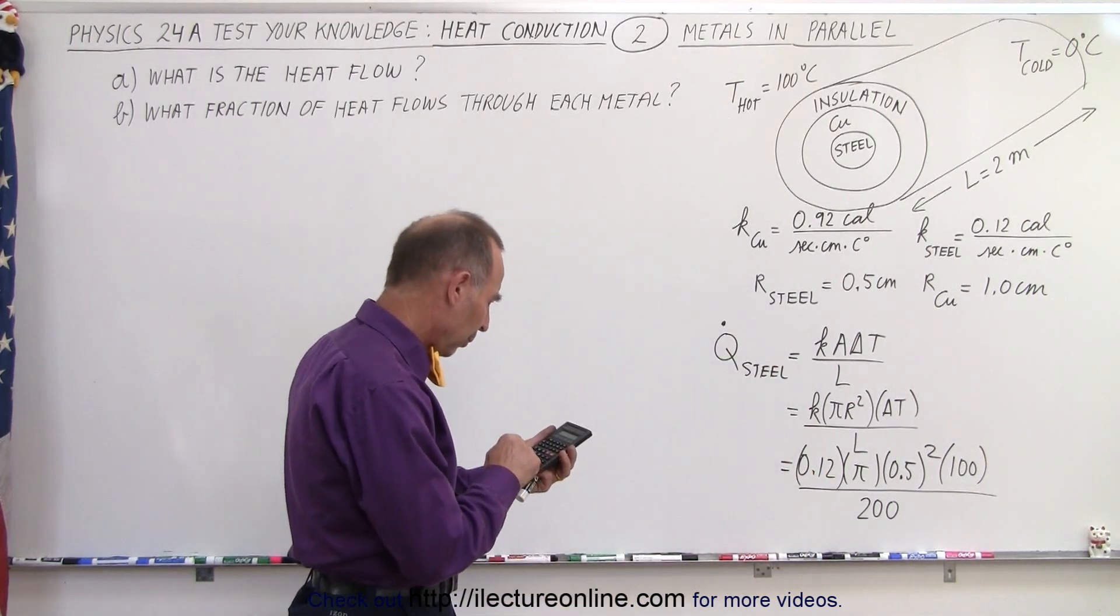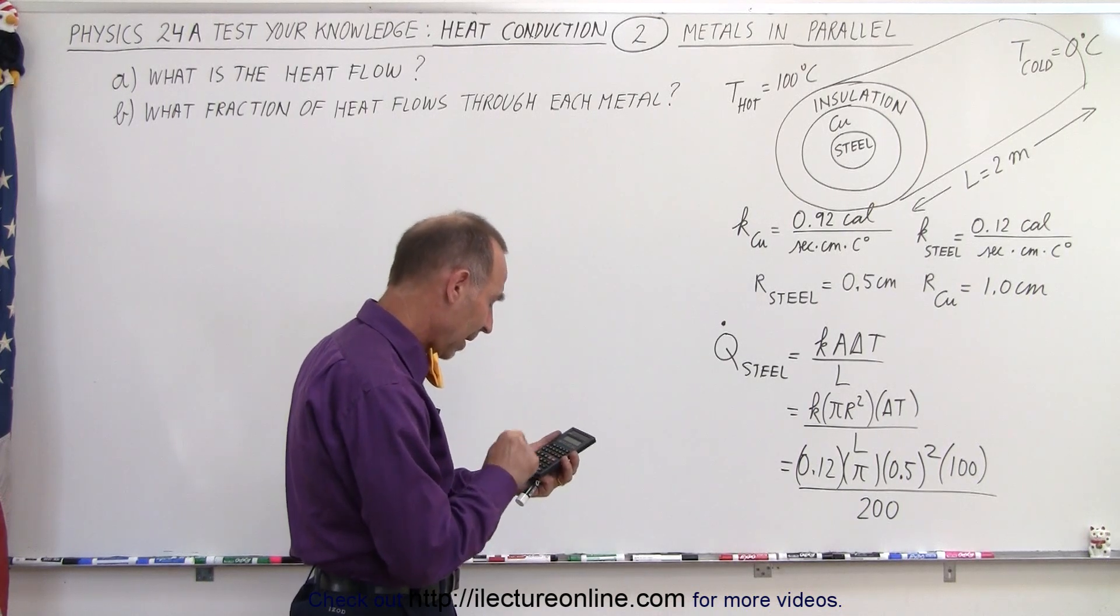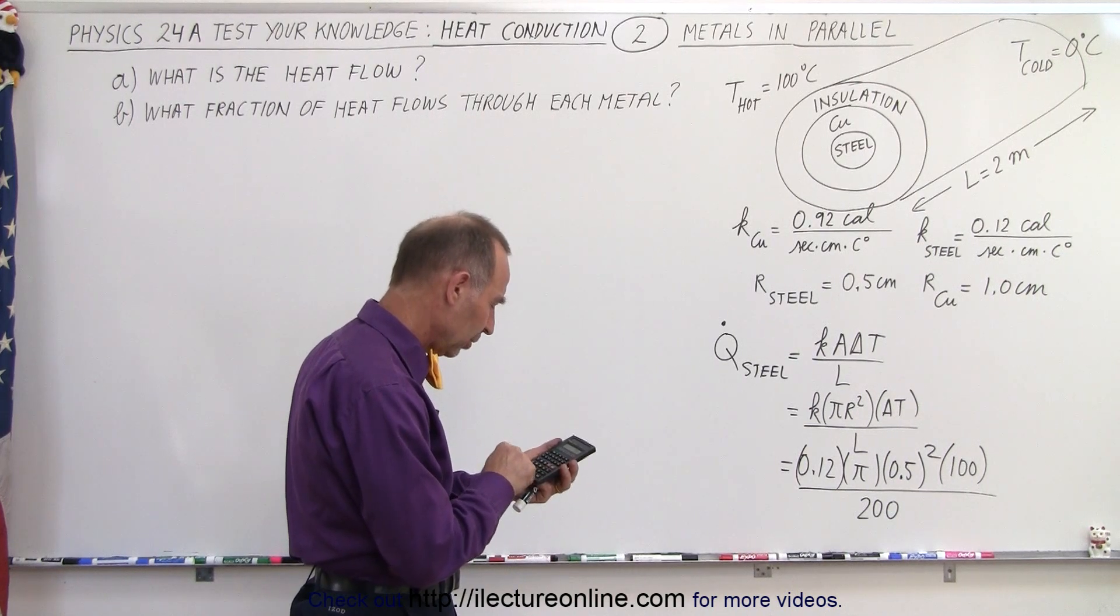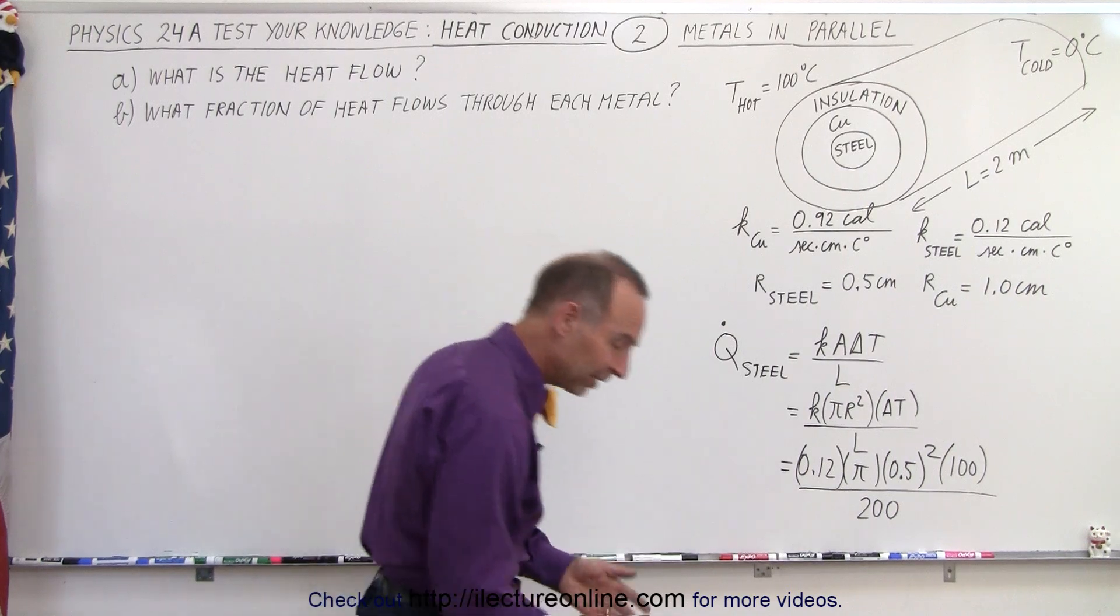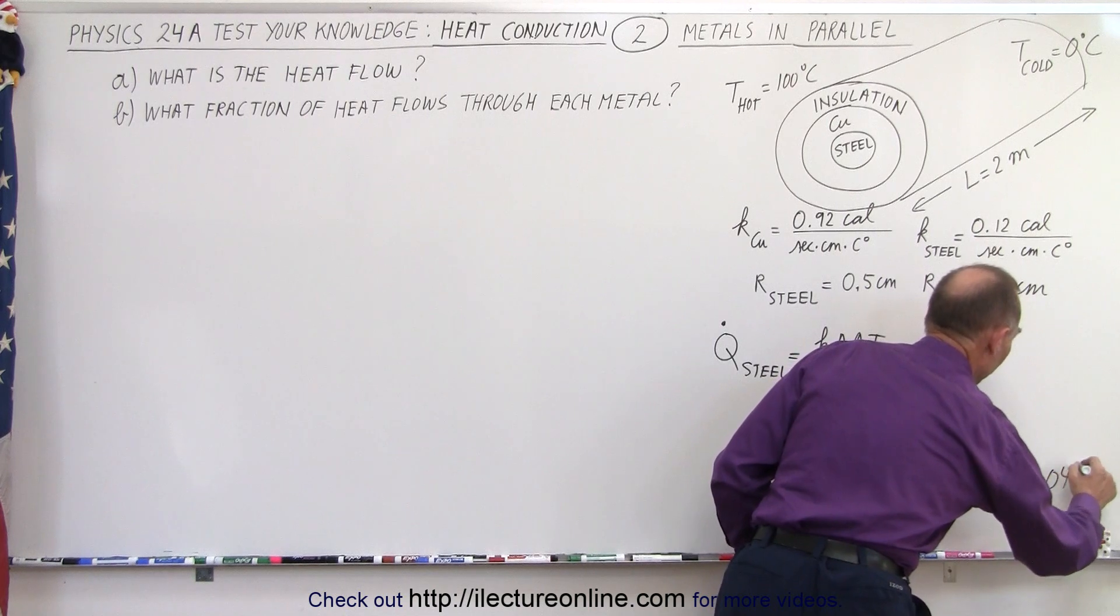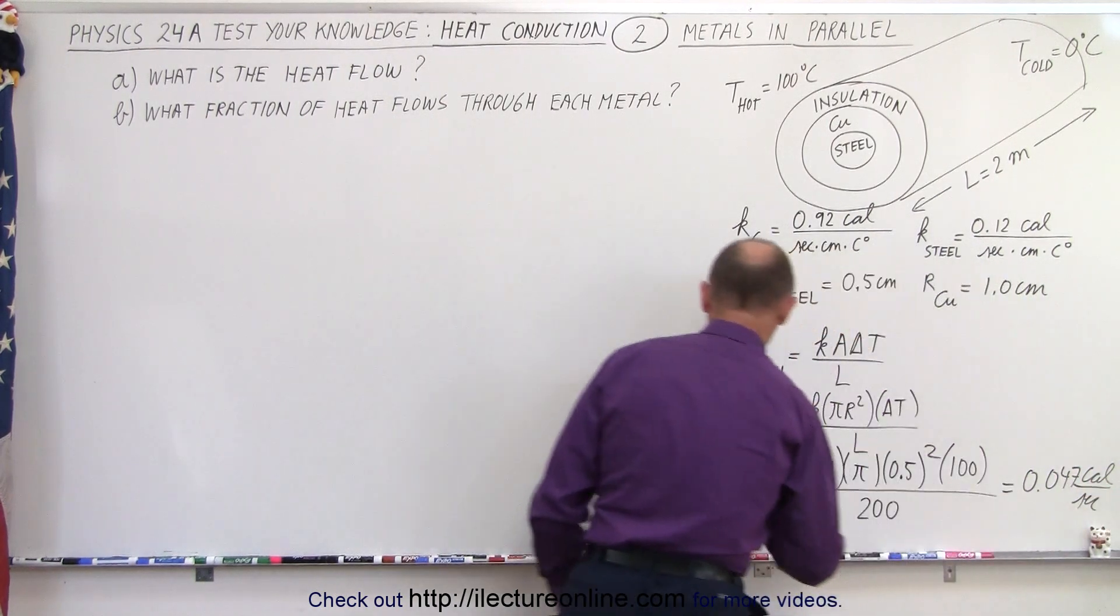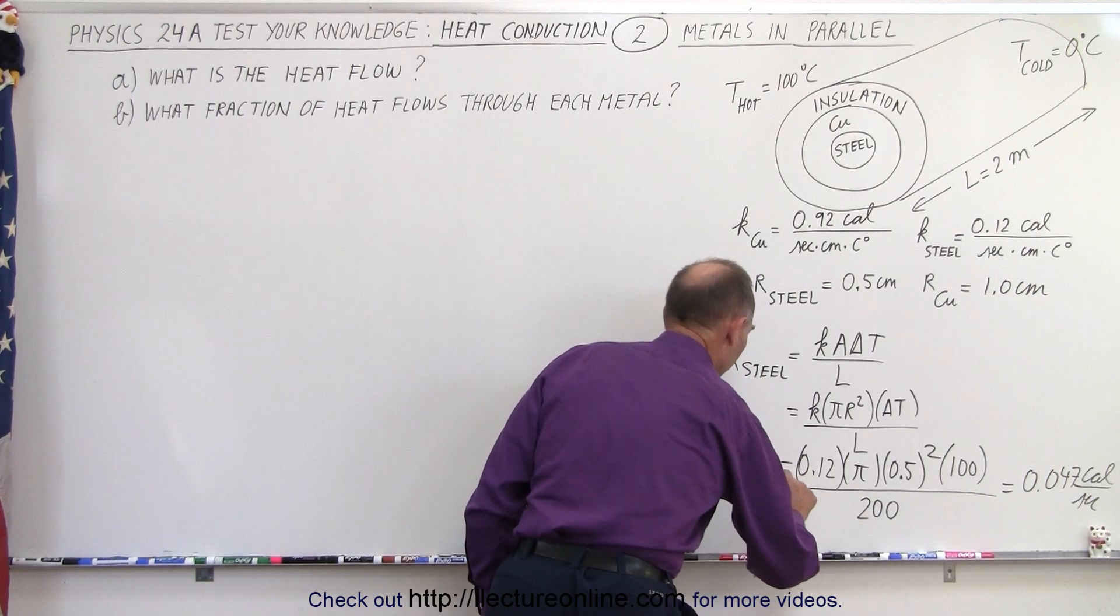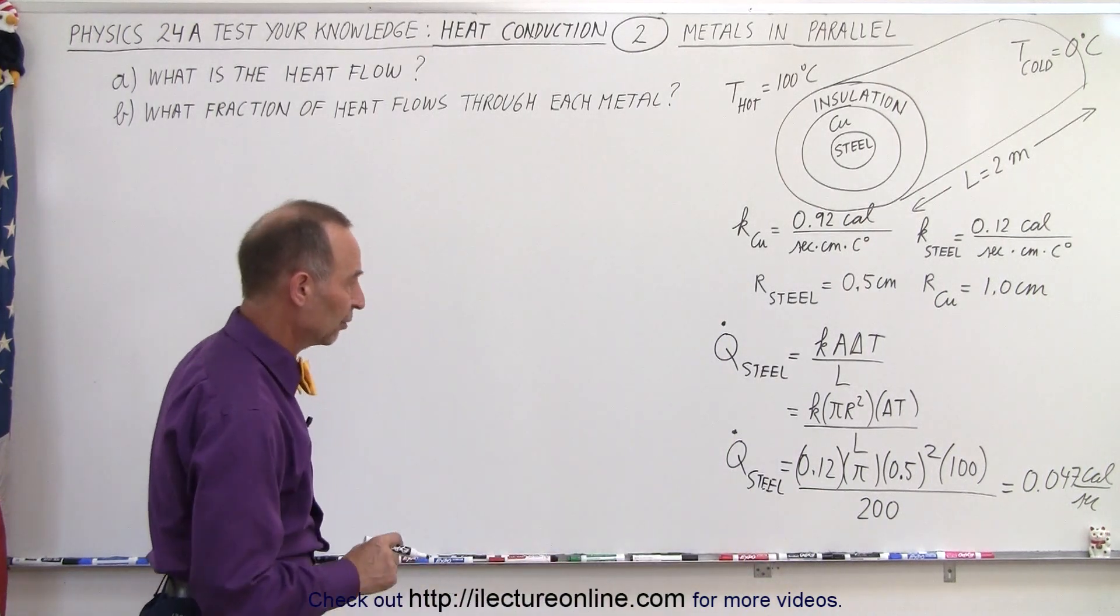So that will be 0.12 times pi times 0.5 squared times 100 divided by 200 and that gives us 0.047 calories per second. So 0.047 calories per second as the q dot dq dt of the steel. The amount of heat flowing through the steel per unit time in calories per second.